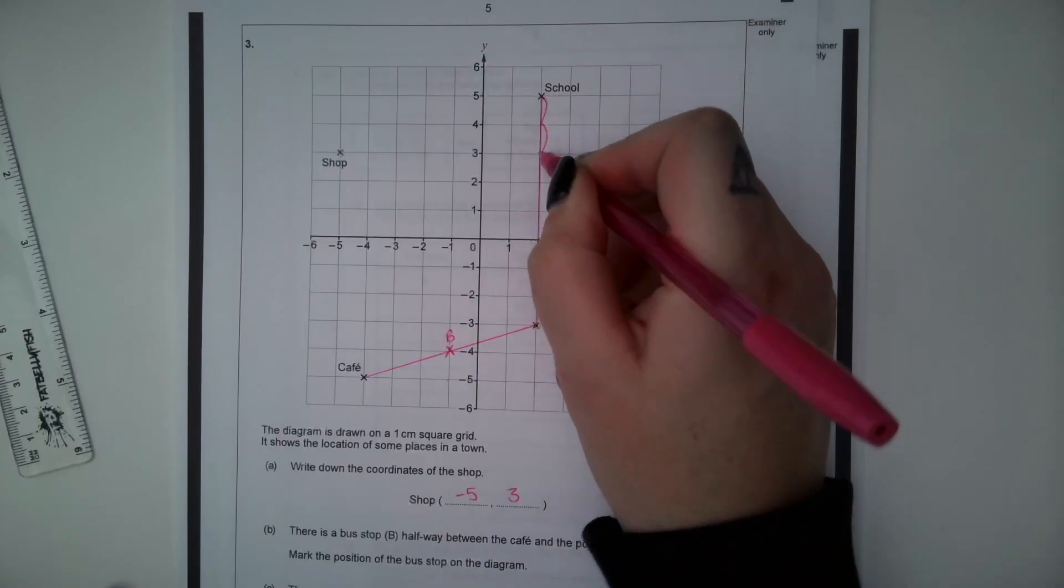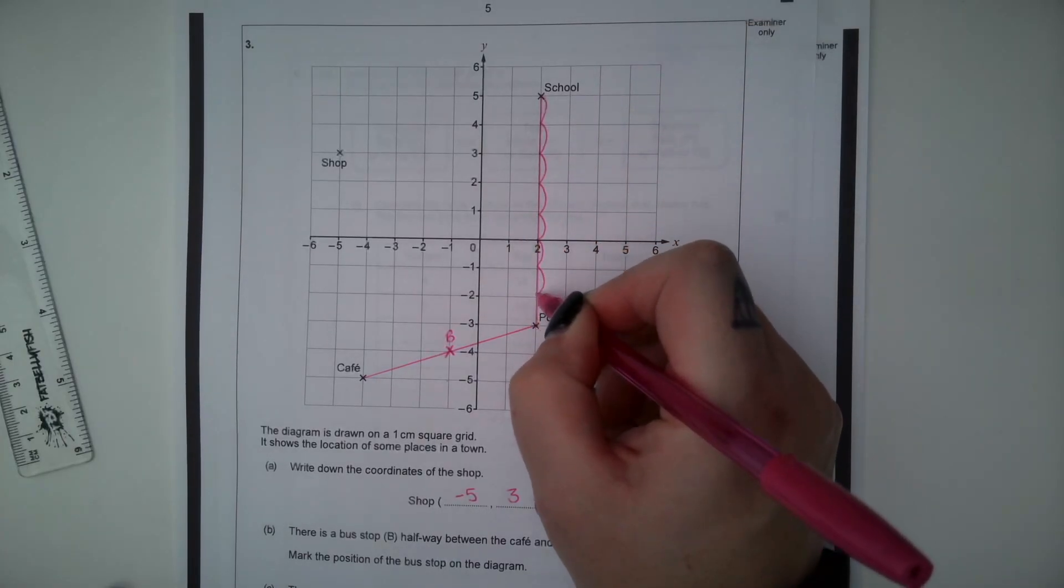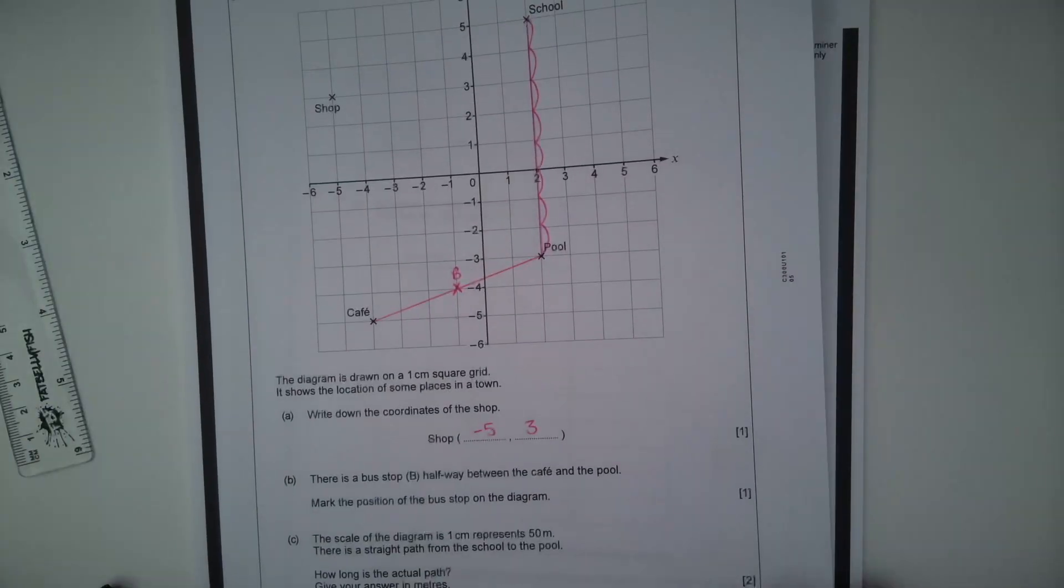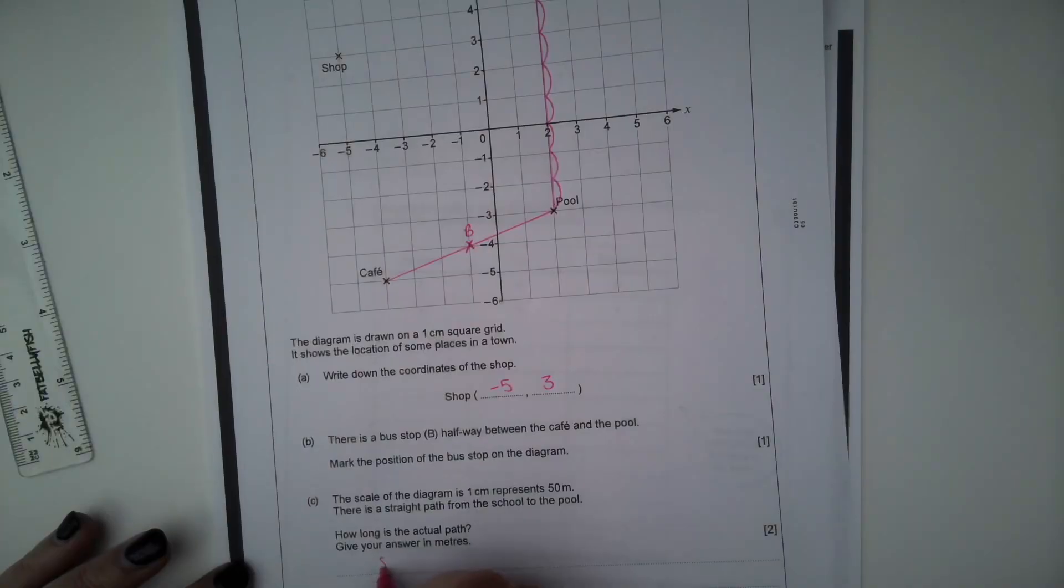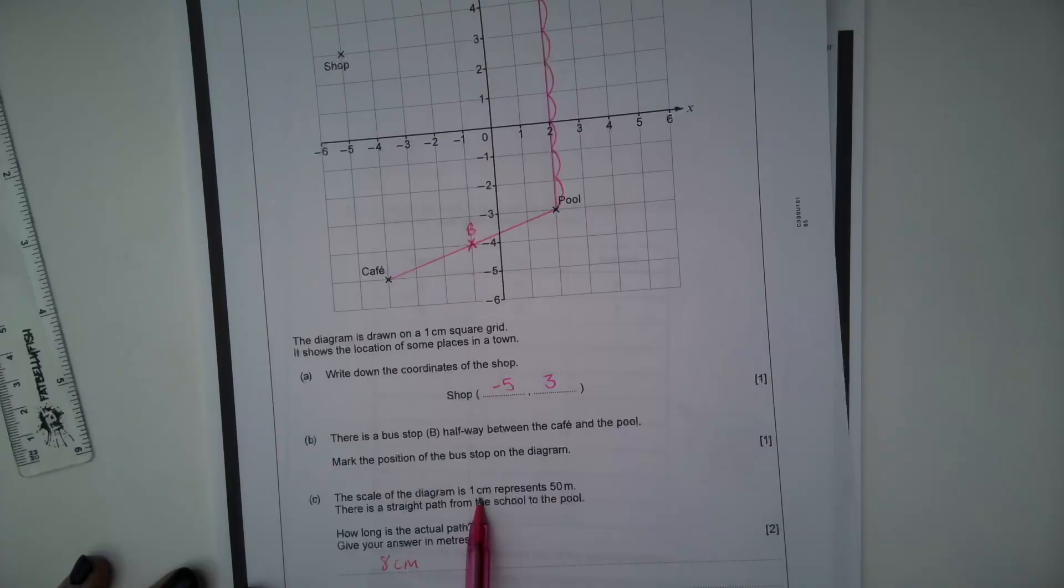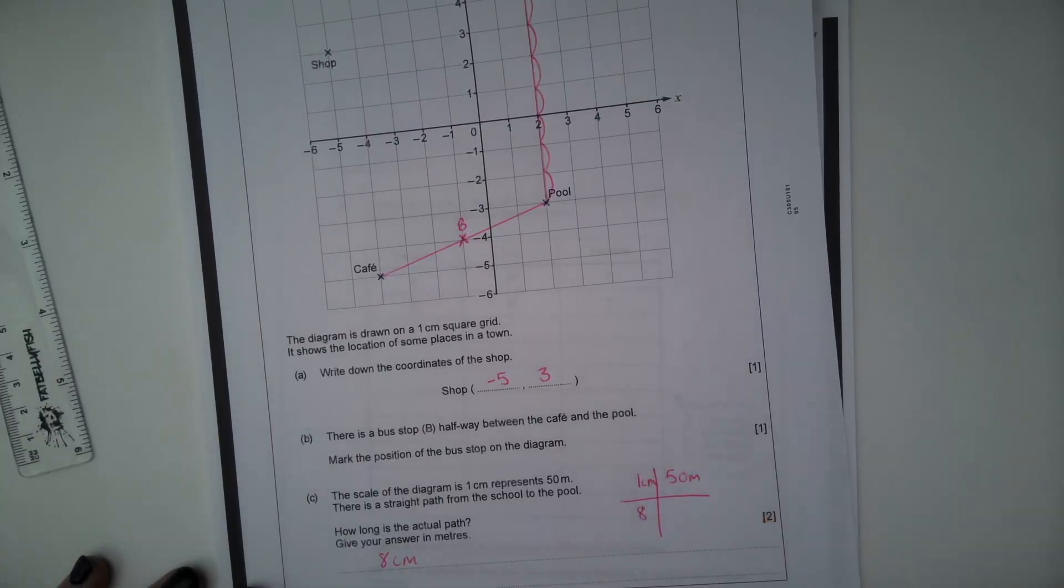This is a one centimeter grid. So we can count the distance from the school to the pool. One, two, three, four, five, six, seven, eight. So it's eight centimeters on the diagram from the school to the pool.